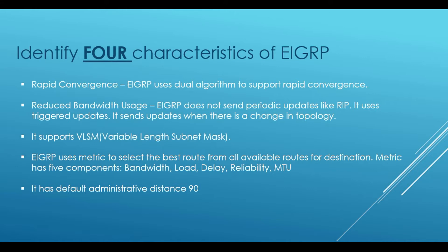EIGRP also supports VLSM, so the network can adapt to large networks. Another characteristic is that it uses a metric to select the best routes from all available routes for a destination. The metrics it uses are bandwidth, load, delay, reliability, and MTU. EIGRP's administrative distance is 90.